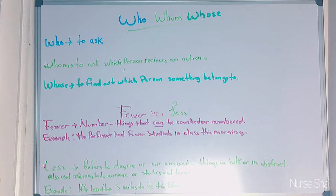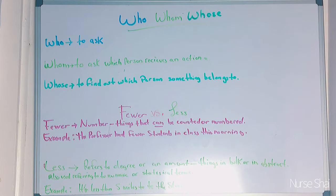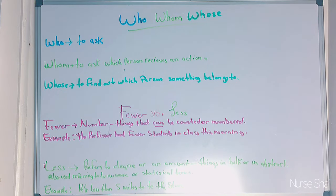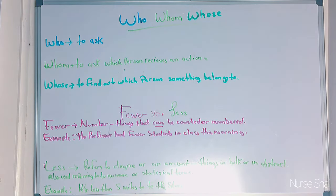Who, whom, and whose: 'who' is used to ask a question — 'Who are you?' 'Who is this?' 'Who will teach today?' 'Whom' is used to ask which person receives an action — 'Whom do you trust?' 'Whom is to blame?' 'To whom this may apply.' 'Whose' is used to find out which person something belongs to — 'Whose car is this?' 'Whose man is this?' — because you're trying to find out who something belongs to.